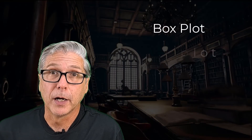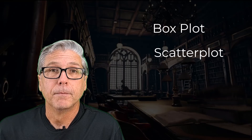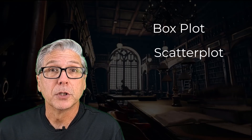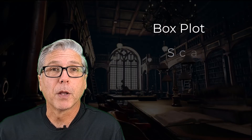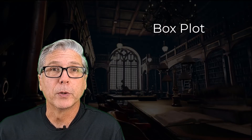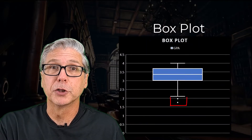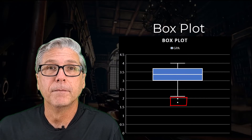Two other quantitative plots worth mentioning now are the box plot or box and whisker plot and the scatter plot. We'll look at both of these plots in later videos, but for now let me just mention that the box plot helps us to locate extreme — meaning either extremely large or extremely small — data values in the data set.